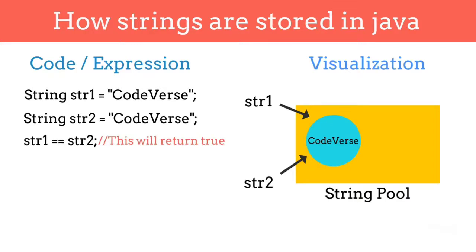Now let's see what will happen when we create a string with a new keyword. When we use an expression like String str3 equals new String CodeVerse, then Java will create a new object in a string pool.